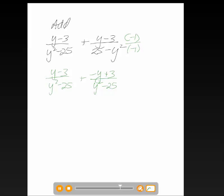So now that they are the same, which they are y squared minus 25, I can add my numerators, and see that my y's go away and my 3's go away, so I just have 0. Well 0 over this is just 0.